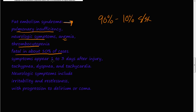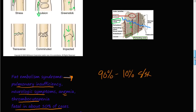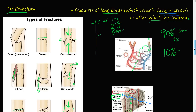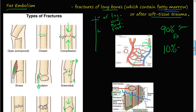Symptoms usually appear one to three days after severe musculoskeletal trauma. You have tachypnea, dyspnea, and tachycardia — increased breathing rate, difficulty breathing, and increased heart rate. Neurological symptoms include irritability and restlessness, which usually progress to delirium or coma. That's fat embolism syndrome in a nutshell, and it happens because you've fractured a long bone or had significant soft tissue trauma.